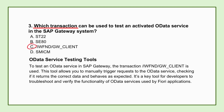SAP provides IWFND/GW_CLIENT as a dedicated test tool specifically for OData services running on the Gateway. It lets you act like the Fiori app — you can manually build HTTP requests: GET requests to fetch data, POST to create, PUT, DELETE, etc. Specify parameters and headers, then send that request directly to your OData service. You see the exact response: the status code, headers, and the data payload in XML or JSON format. It's invaluable for developers troubleshooting service issues or administrators verifying a service is active and behaving correctly before involving the Fiori app.